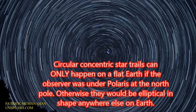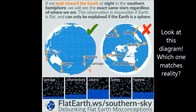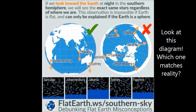Circular concentric star trails can only happen on a flat earth if the observer was directly under Polaris at the north pole — otherwise they would be elliptical in shape anywhere else on Earth. Look at this diagram. Which one matches reality?